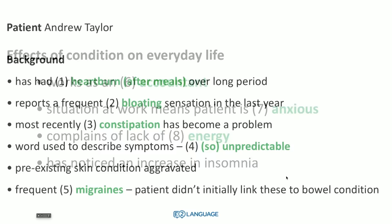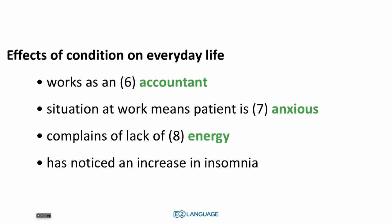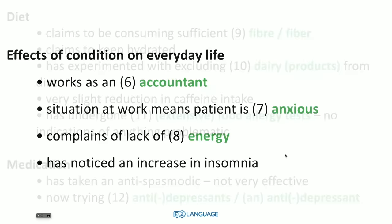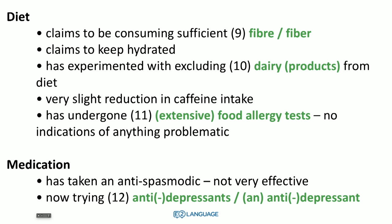Number six: he works as an accountant — maybe you missed that, it was said very quickly. Number seven — situation at work means patient is: anxious. Number eight is energy — a lack of energy; I predicted sleep, but there you go — energy. So do be careful even if you see keywords like insomnia. Number nine: claims to be consuming sufficient fiber — either spelling would be correct. Number ten: experimented with excluding dairy, or 'dairy products' would also be correct. Number eleven: has undergone food allergy tests — plural. 'Extensive food allergy tests' would also be correct; just 'allergy tests' would be wrong as it's not specific enough. Number twelve: now trying antidepressants — with or without a hyphen is correct.